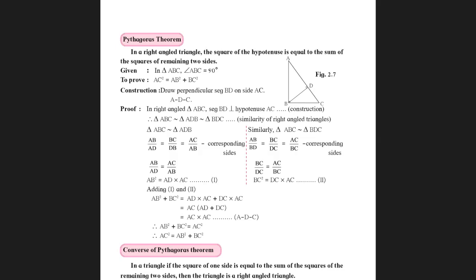Adding equations one and two: AB squared plus BC squared equals AD times AC plus DC times AC. Taking AC as common: AC times (AD plus DC). Since AD plus DC equals AC, we get AC times AC equals AC squared. Therefore, AB squared plus BC squared equals AC squared, which is Pythagoras theorem. Children, learning this theorem along with the proof is very important — practice it so you can solve it well in your exam.